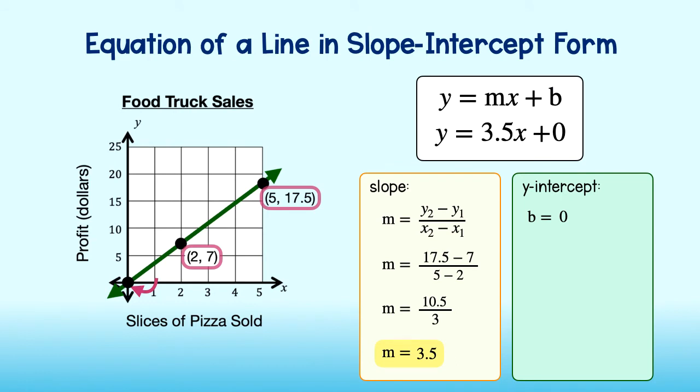Do you think this is coincidence? In fact, it is not. The slope of the line is the unit rate, or the rate for one unit. In this case, the food truck sells pizza at a rate of three dollars and fifty cents per one slice of pizza.